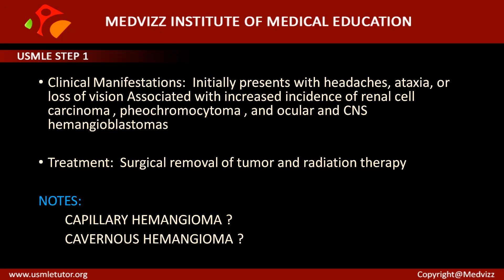There are two important terms to know: capillary hemangioma and cavernous hemangioma. Capillary hemangioma is a malformation of a cluster of capillary-like channels filled with blood, and it is the most common tumor of infancy. Cavernous hemangioma consists of large vascular spaces filled with blood — much larger than the small channels seen in capillary hemangioma.